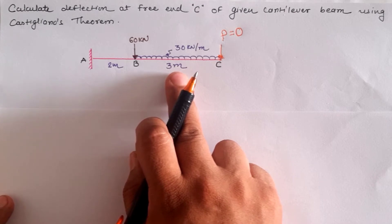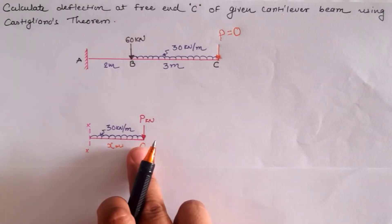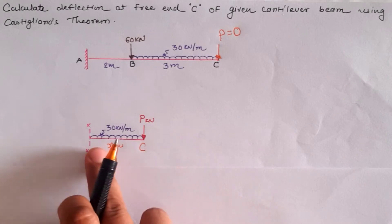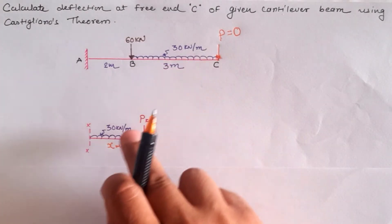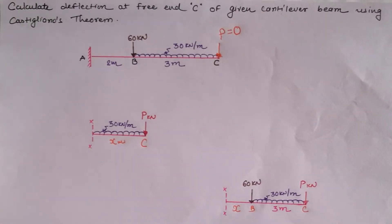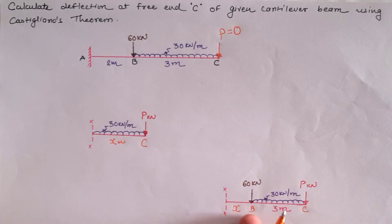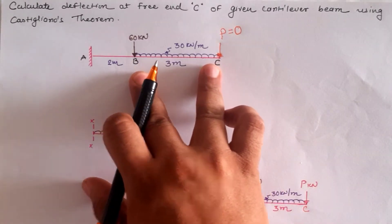For the sectional analysis of the first segment B to C, the distance is x, the UDL load is 30 kN per meter, and the arbitrary load is P kN. For the A to B segment, the distance is x meters from location B, with the remaining value being 3 meters, and loaded as shown in the figure.